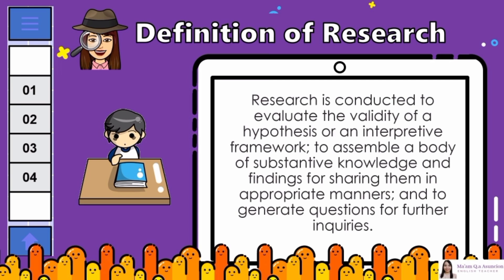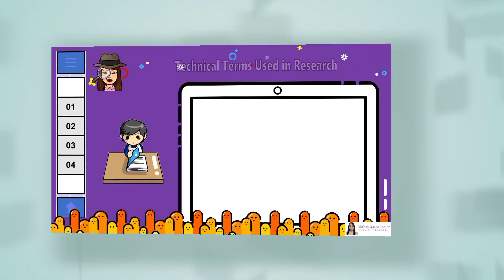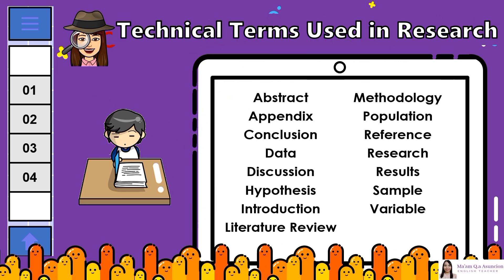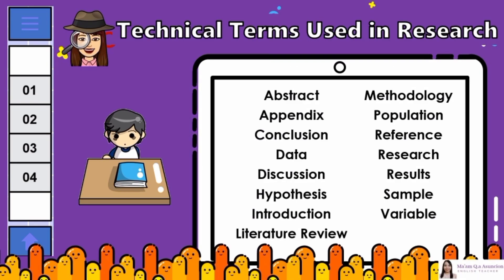When we conduct research someday, it is important that we get to know the technical terms used in research first. Here are some technical terms used in research: abstract, appendix, conclusion, data, discussion, hypothesis, introduction, literature review, methodology, population, reference, research, results, sample, environment, variable.